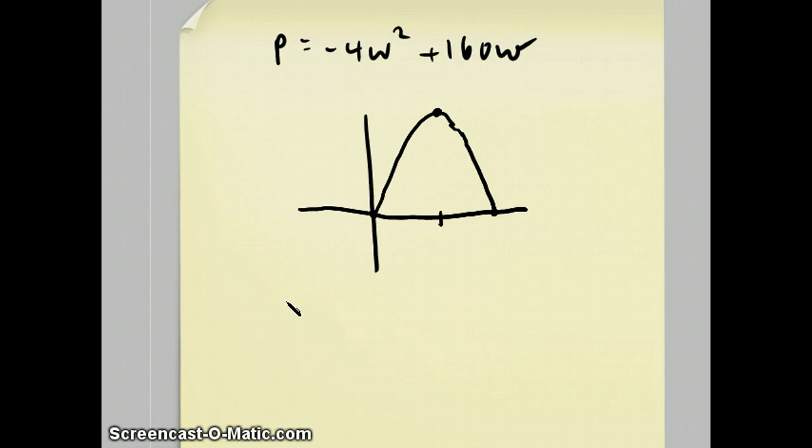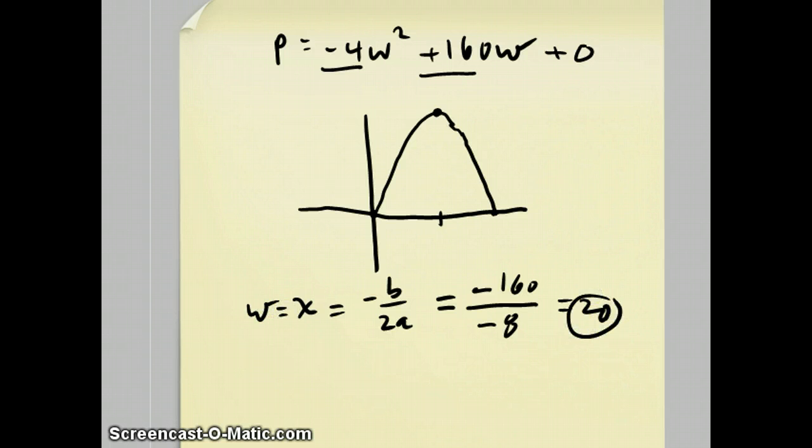It's x is negative B over 2A. This is A is negative 4, B is 160, C is 0. So negative B is negative 160 over 2A, which is negative 8, reduces to positive 20. And it was really W, not x. So that's our answer, 20. If they wanted to know what was the maximum profit, you then have to plug 20 into this equation. Always be sure you answer the question that they actually asked. In this case, they just wanted to know the x-coordinate of the vertex, which is 20.